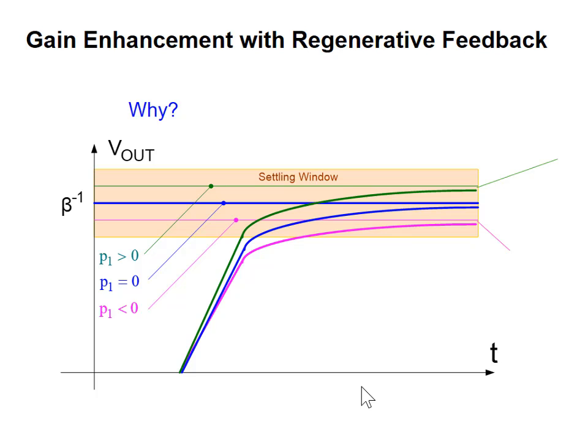If the pole is in the left-half plane (p1 less than 0), it settles like this, and the settling time is when it gets into that window. If the pole is at the origin, it gets into that window sooner. If you put the pole in the right-half plane, the output's going to overshoot. If the pole is in the left-half plane, the output will undershoot and asymptotically approach from below. If the pole is in the right-half plane, it will overshoot and asymptote from above. Now, if it overshoots or undershoots by 1%, the effect on the system will be about the same.